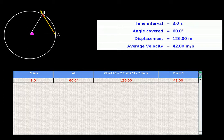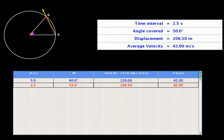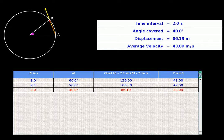Let us reduce the duration to 2.5 seconds and repeat the calculations. Displacement AB is now 106.5 meters and average velocity is 42.60 meters per second. These values are again shown in the text area and in the second row of the table. For the duration of 2 seconds, the displacement is 86.19 meters and average velocity is 43.09 meters per second.